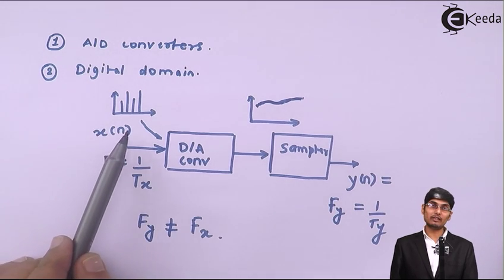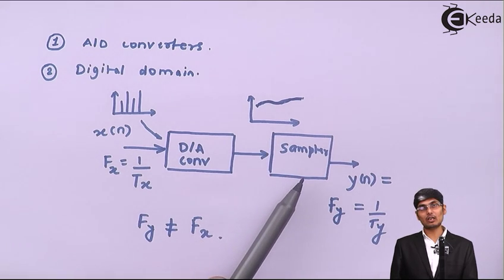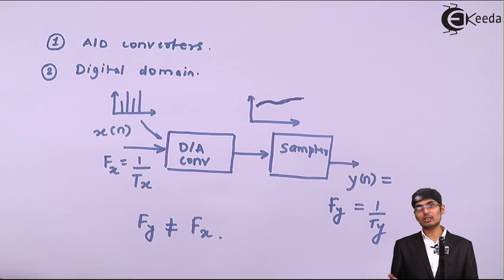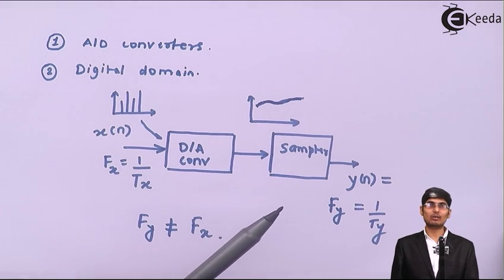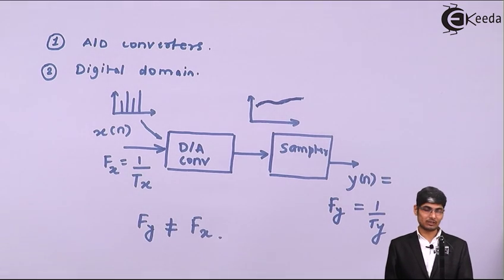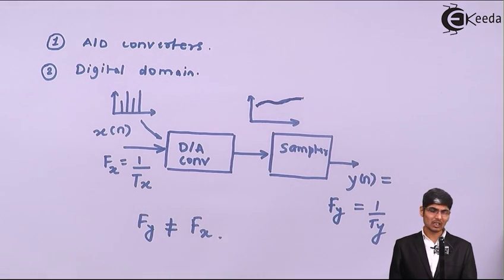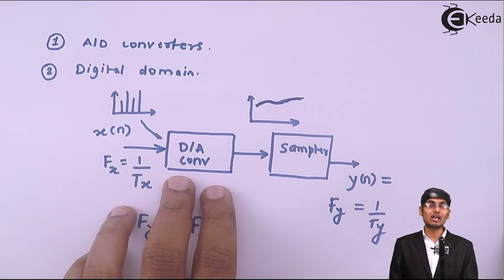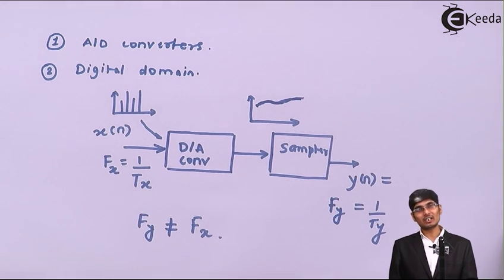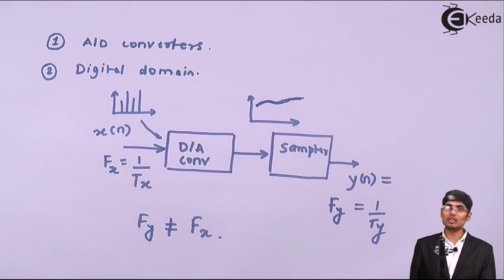So what we did: we took x(n), which is discrete, converted it into analog, resampled the analog signal at a different rate, and produced a different sampled version. The major problem arises at the D-to-A conversion stage, where a large amount of approximation is introduced, causing the analog signal to suffer. Resampling at a different rate further approximates and loses information.